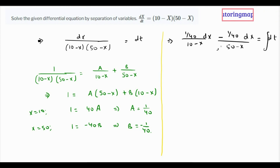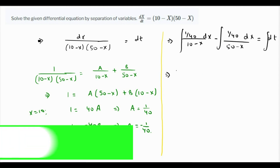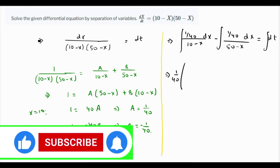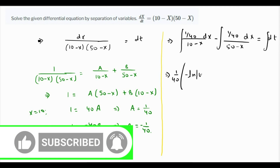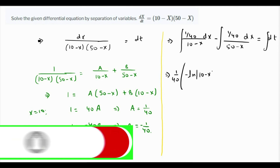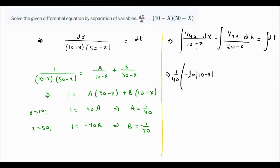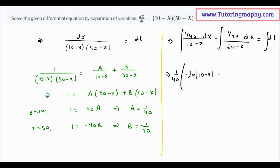Let's put the minus sign in the middle and integrate. 1 over 40 is a constant, so we take it out. The integration of dx over (10 minus x) is minus the natural log of (10 minus x) — the minus sign appears because of the minus x in the denominator. Likewise, the integration of dx over (50 minus x) is minus the natural log of (50 minus x).